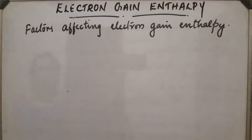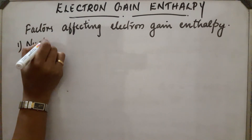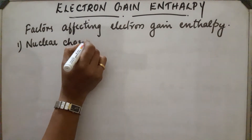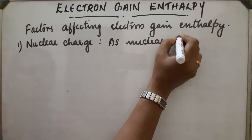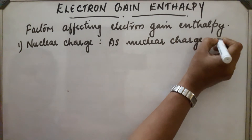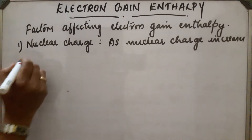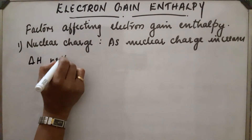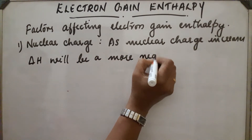Factors affecting electron gain enthalpy. First: nuclear charge. As nuclear charge increases, the addition of electrons attracts more towards the nucleus, so more energy is released — delta H will be a more negative value.